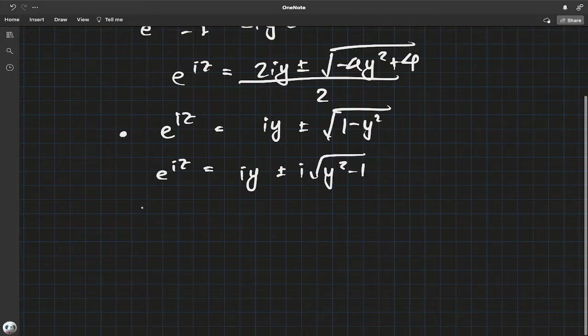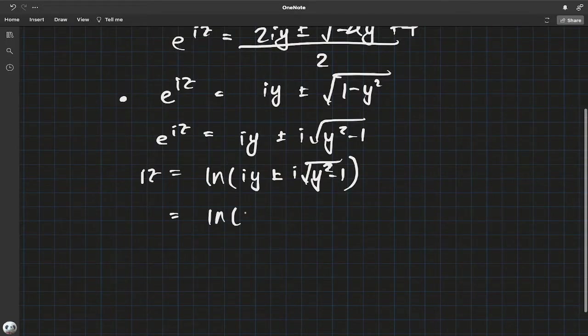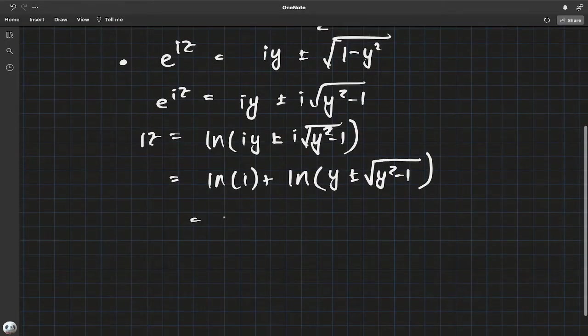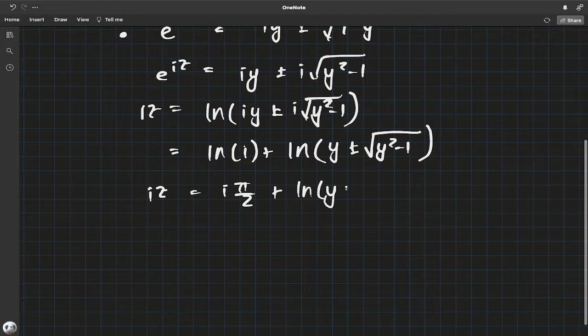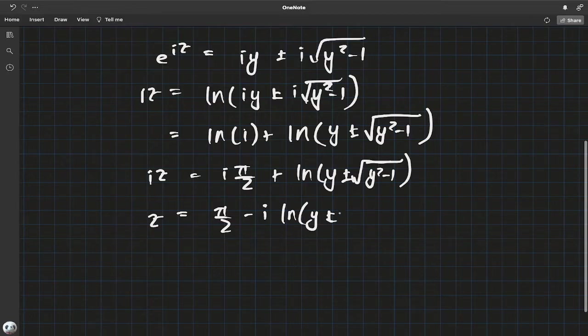Now since y is greater than one, you can take an i out and reverse the signs. When we do that and take the natural log on both sides, we have iz equals natural log of iy plus or minus i times square root of y² - 1. You have natural log of i plus this other factor. Again, natural log of i is iπ/2, the principal value. Divide by i: we get π/2 minus i natural log of y plus or minus square root of y² - 1.